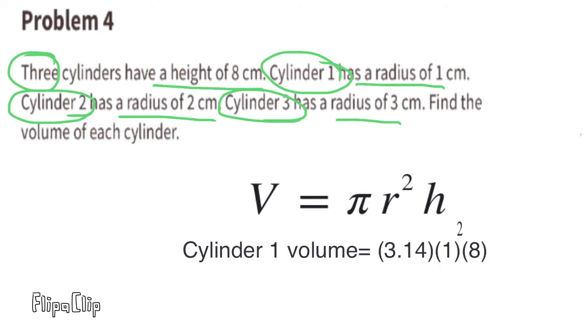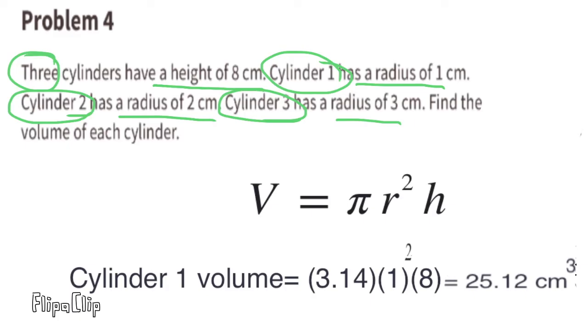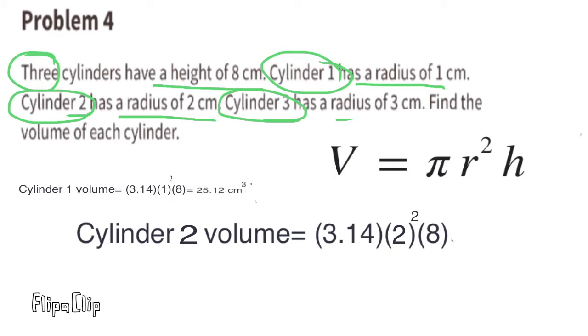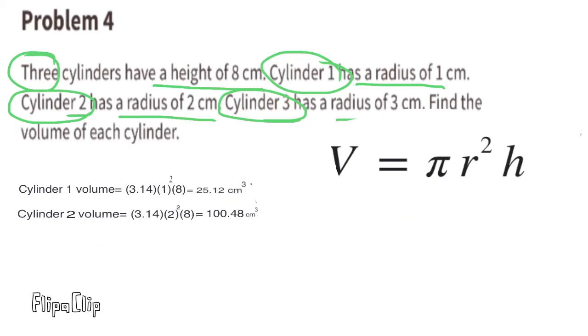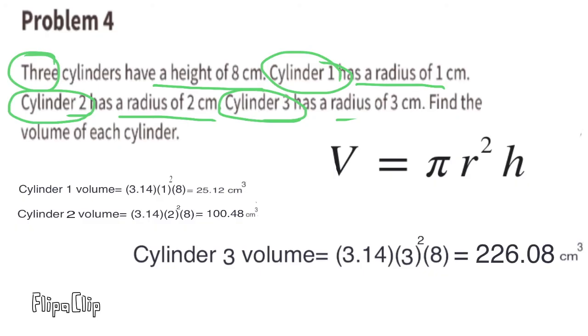Cylinder number 1 has a radius of 1 centimeter. To find the volume, we'll multiply 3.14 times 1 squared times 8 centimeters. Cylinder 1 has a volume of approximately 25.12 centimeters cubed. Cylinder 2 has a radius of 2 centimeters. We'll multiply 3.14 times 2 squared times 8. The volume for cylinder 2 is approximately 100.48 centimeters cubed. Cylinder 3 has a radius of 3 centimeters. We'll multiply 3.14 times 3 squared times 8. Cylinder 3 has a volume of approximately 226.08 centimeters cubed.